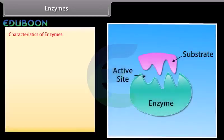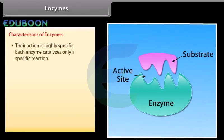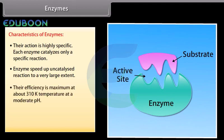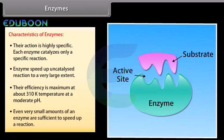Some common and important characteristics of enzymes are: their reaction is highly specific, and each enzyme catalyzes only a specific reaction. Enzymes speed up uncatalyzed reactions to a very large extent. Their efficiency is maximum at about 310 K temperature at a moderate pH. Even very small amounts of an enzyme are sufficient to speed up a reaction.